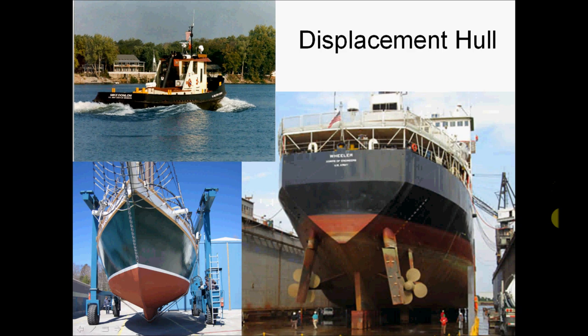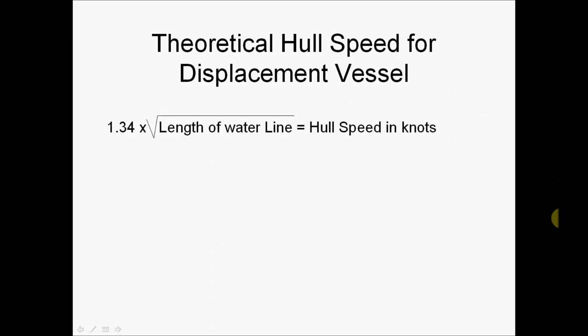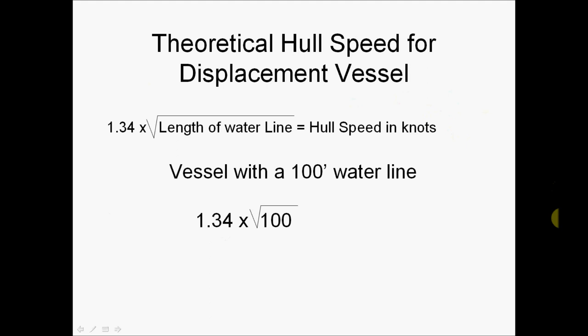Some of the drawbacks of a displacement hull is that the speed through the water is limited by the wave created by the hull. We call this limitation the theoretical hull speed for displacement vessels. There's a rule of thumb where you can calculate a vessel's theoretical hull speed: 1.34 times the square root of the length of the waterline, which gives you the hull speed in knots. For example, if we have a vessel with a 100-foot waterline, it's 1.34 times the square root of 100 — that's 1.34 times 10 — equals 13.4 knots.